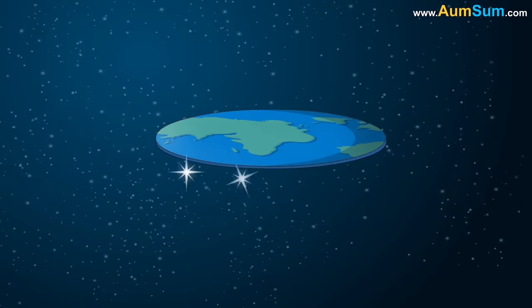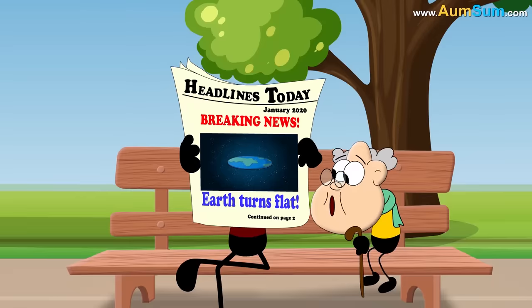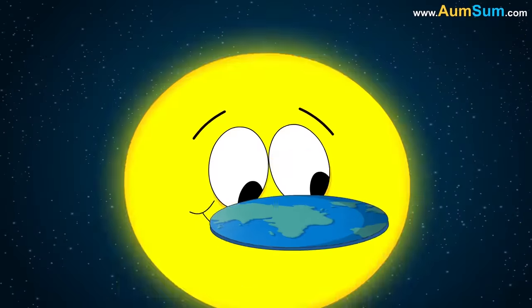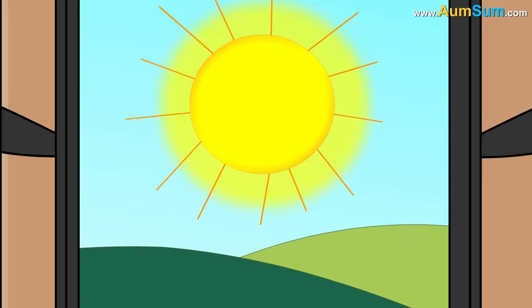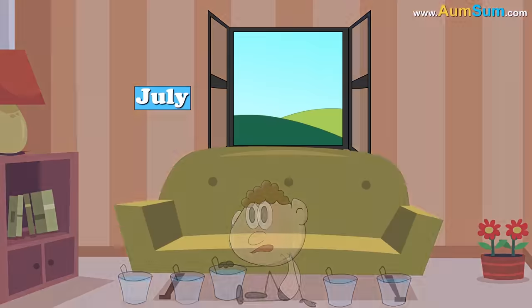Now, if Earth was flat and not a sphere, then it would obviously stop rotating. This will lead to the following problems. Firstly, only revolution around the sun but no rotation around its axis would mean that Earth will experience a 6 month long day, followed by a 6 month long night.